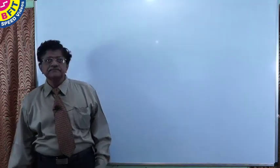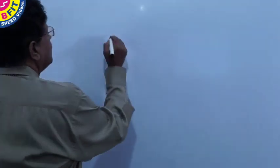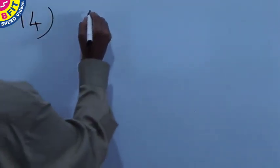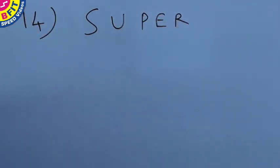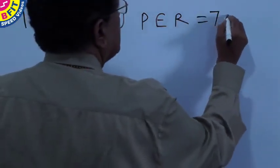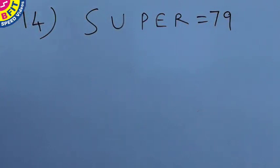Now let us see the working. Question number 14: SUPER is equal to 79. Obviously, they have converted the alphabets into a numeric value based on the positional value of the alphabet — A is equal to 1, B is equal to 2, C is equal to 3, D is equal to 4, and so on.